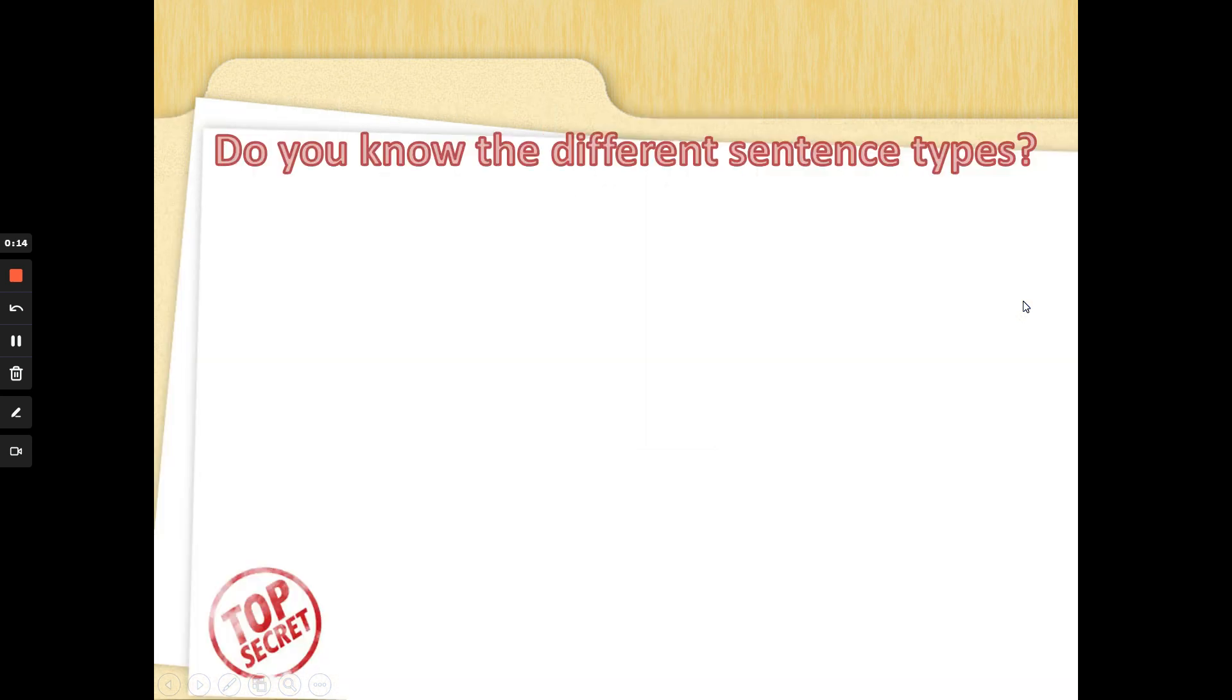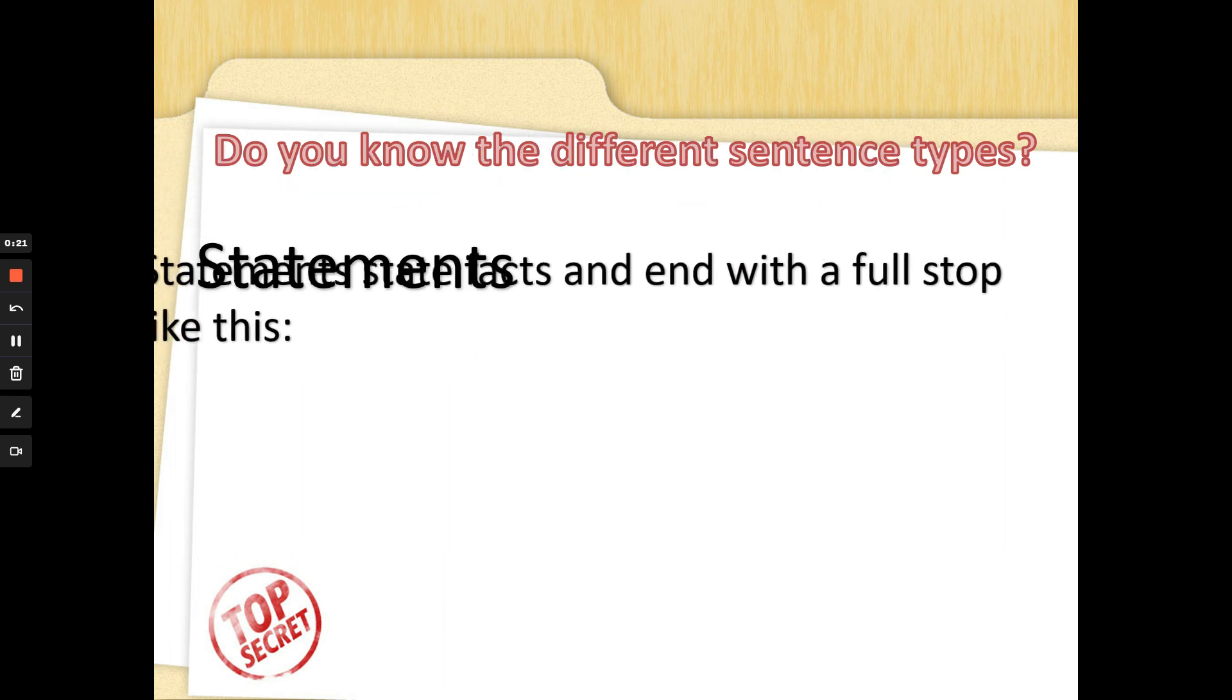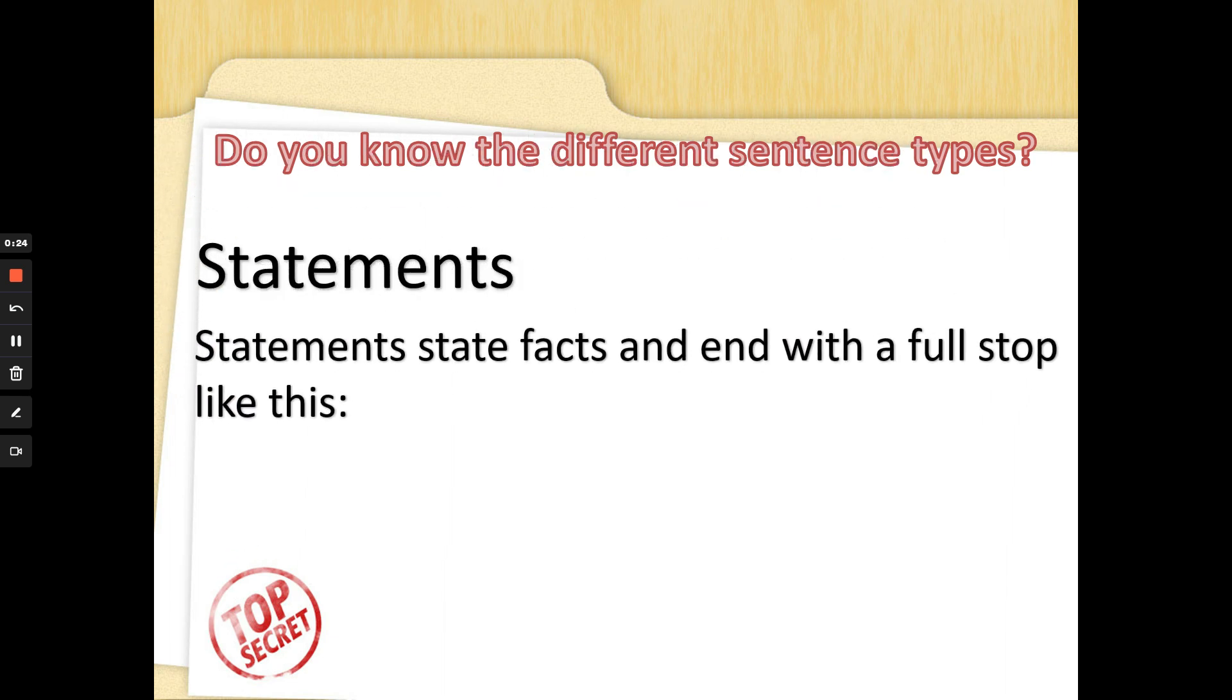Do you know the different sentence types? We've learned four of them in year two this year. The first sentence type are the sentences you write lots of, statements. Now statements state facts and end with a full stop like this. It was snowing this morning so you're just telling me something and that is called a statement. Did you spot the full stop? And don't forget the capital letter.